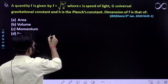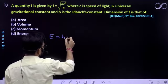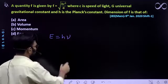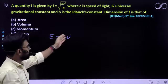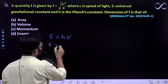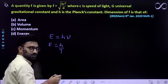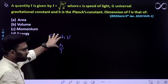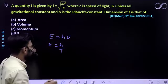Pahle baat karte hai h ki. We know that E = hν. Energy of a wave is given by E = hν. Yahan pe expression me gaya hai, so it would be energy by frequency is equal to h. Frequency kya hota hai, one upon time period ke barabar hota hai.